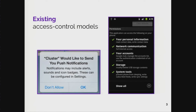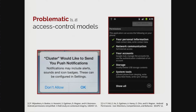Mobile operating systems typically rely on some combination of runtime and install-time prompts. Runtime prompts, like the one on the left, appear in iOS and in newer versions of Android for some permissions. These pop up the first time you try to access a permission and ask if the application should be able to access it. Install-time prompts, like the one on the right, appear in older versions of Android when you first install the application. But both of these are problematic — users find them really confusing.